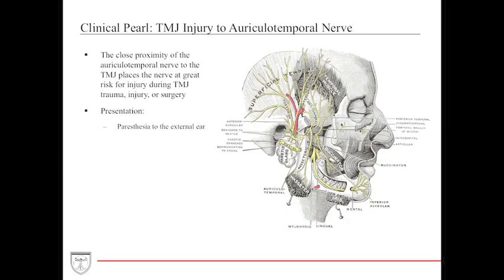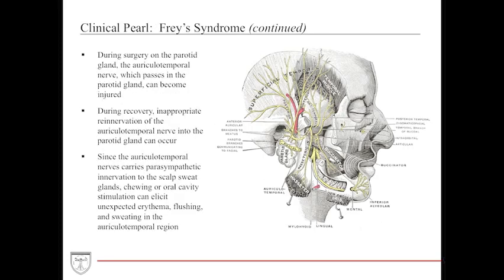A key clinical pearl: the temporomandibular joint is a very complex joint important for oral surgery, mastication, phonation, and facial movement. Because it is in such close proximity to neurovascular structures — particularly the auriculotemporal nerve — injury to the TMJ through surgery, iatrogenic causes, or trauma can injure the auriculotemporal nerve, causing paresthesia to the external ear or the region it supplies.